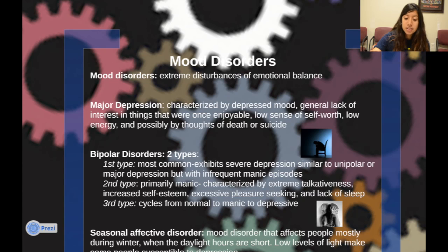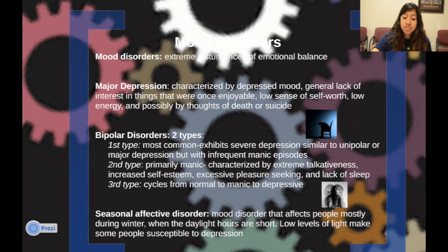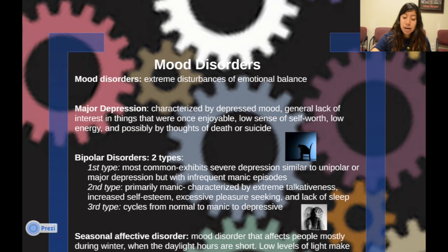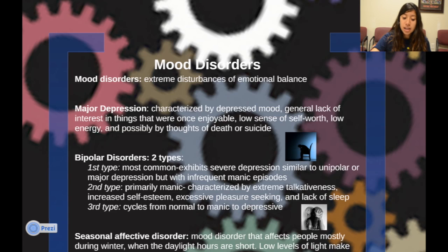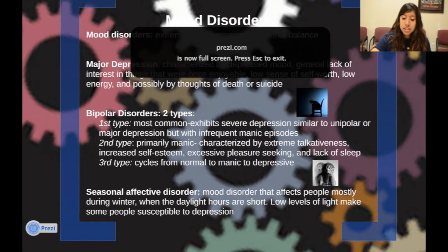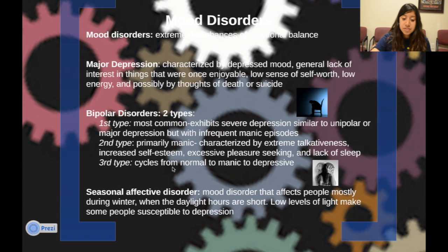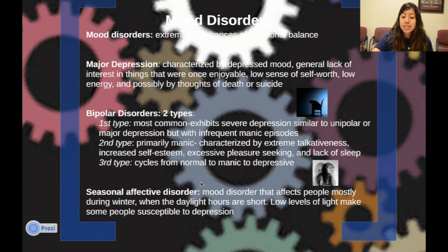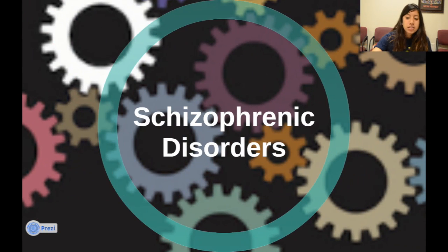The first and most common bipolar type exhibits severe depression similar to unipolar or major depression, but with infrequent manic episodes. The second type is primarily manic, characterized by extreme talkiness, increased self-esteem, excessive pleasure-seeking, and lack of sleep. A third type cycles from normal to manic-depressive — cycling between the first and second types. Seasonal affective disorder, or SAD, is a mood disorder affecting people mostly during winter when daylight hours are short, causing low energy and depression.